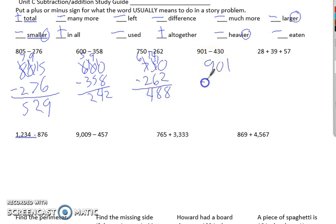Nine hundred and one minus four hundred thirty. One minus zero, don't need to borrow. So I've just got a one there. Zero minus three, need to borrow. He goes to eight. He goes to ten. Ten minus three is seven. Eight minus four is four.